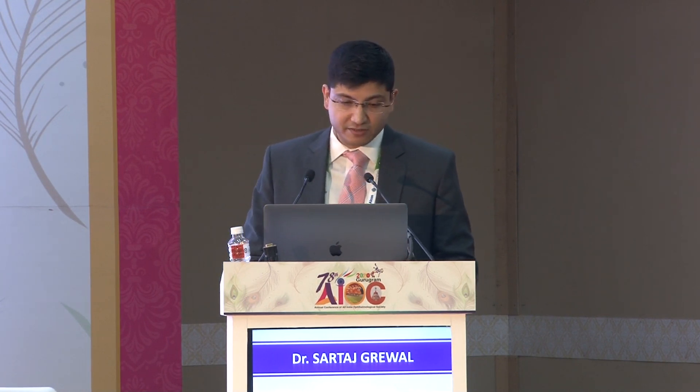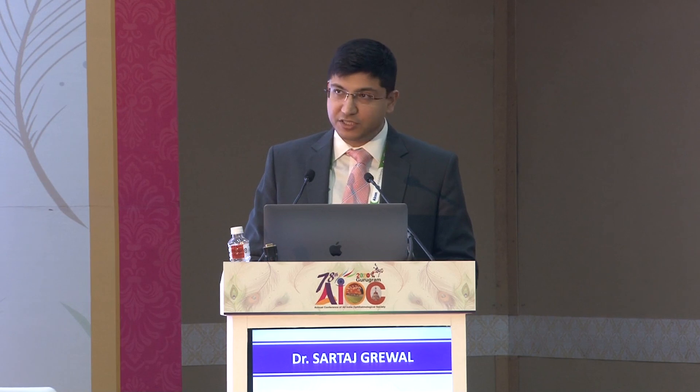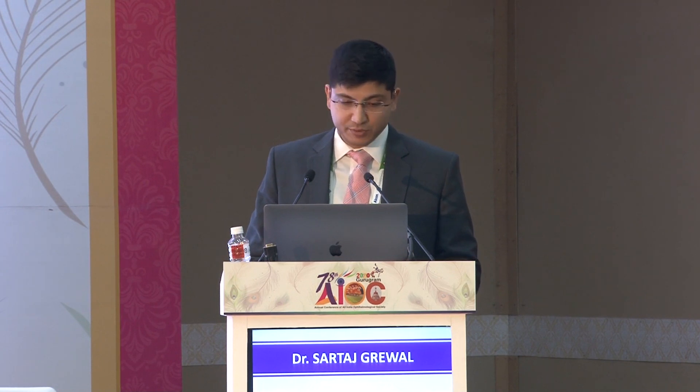Next we look at the Q value, defined as the radial change from the center to the periphery of the corneal surface. It reflects corneal shape and optical properties including refractive power, spherical aberrations, and aberration distribution. A normal value is anything between minus one and zero.